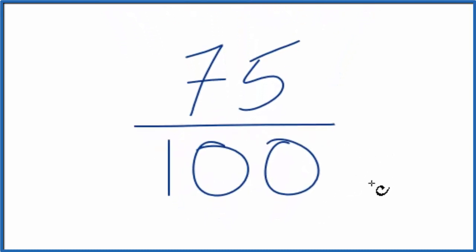The first thing we want to do is find a common denominator, something that goes into both 75 and 100, a whole number.